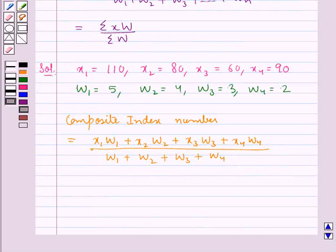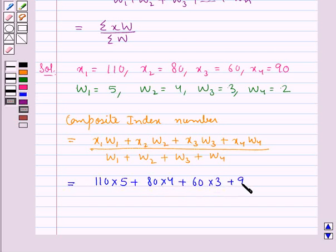Now substituting the respective values we get this is equal to 110 times 5 plus 80 times 4 plus 60 times 3 plus 90 times 2 and this whole upon 5 plus 4 plus 3 plus 2.